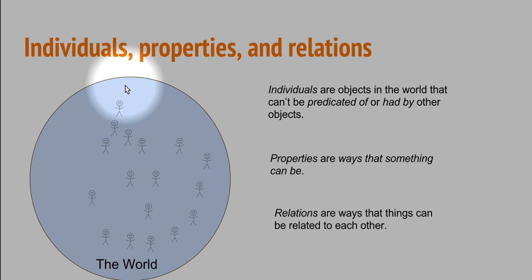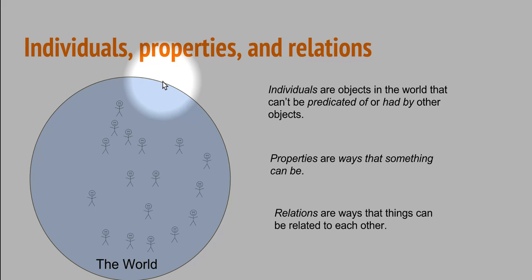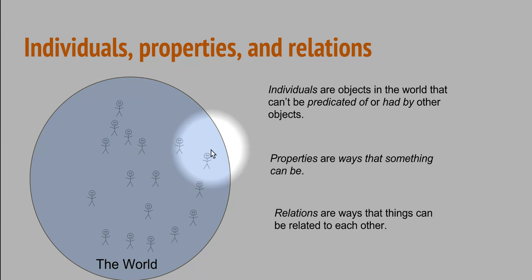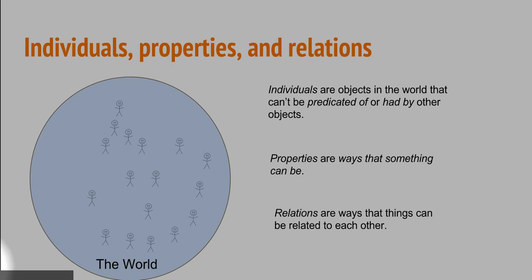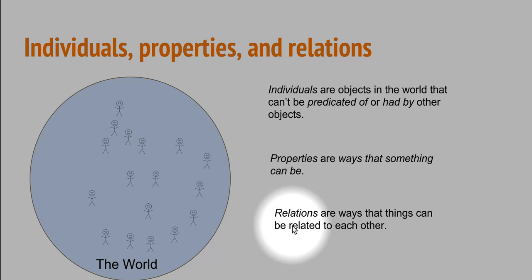So George Washington, for example, he's an individual. And Abe Lincoln, he's an individual. They both have the property of being a US president, but they themselves aren't properties. Washington and Lincoln are different individuals, and they can't have each other in the same way that they can have the property of being a president. The world is made up of a bunch of individuals, and those individuals can have various properties and stand in various relations to each other.